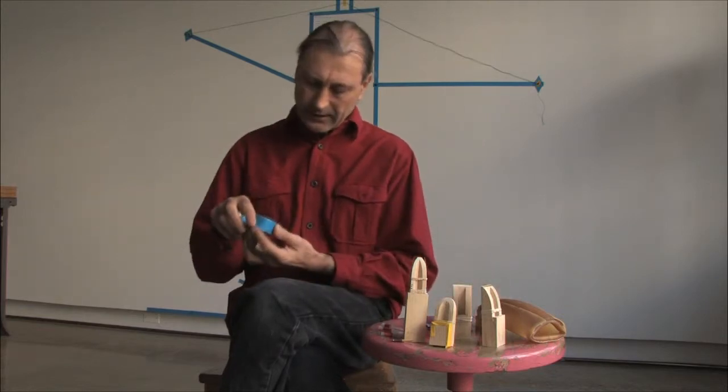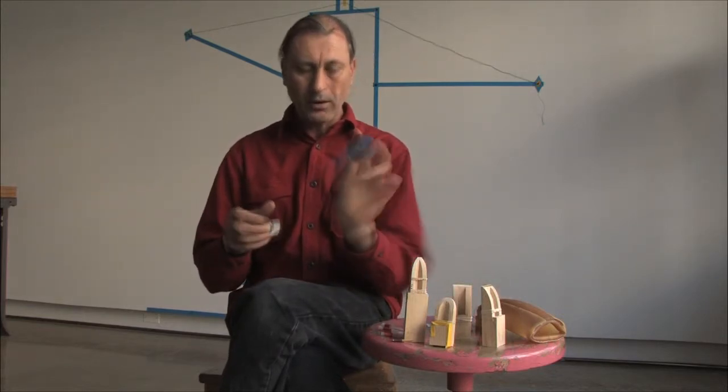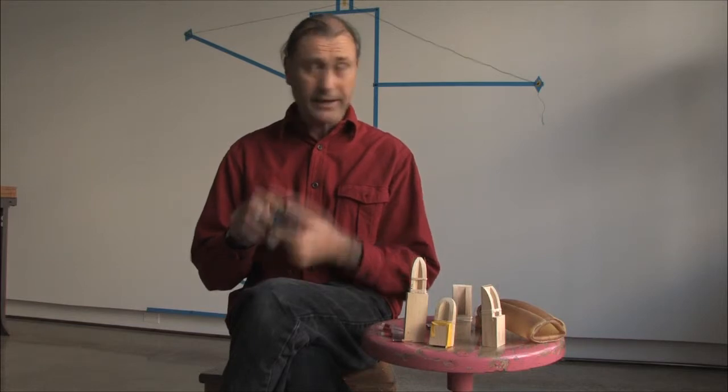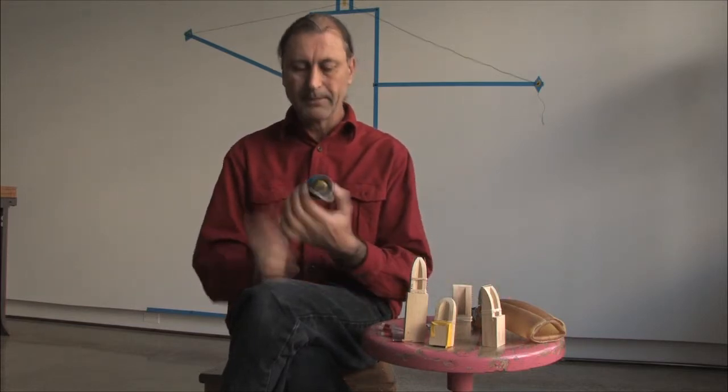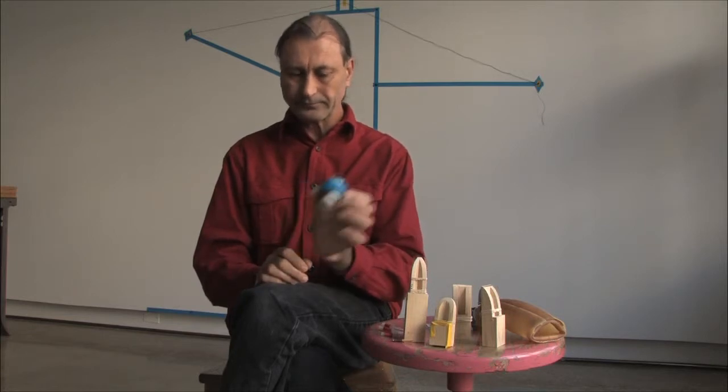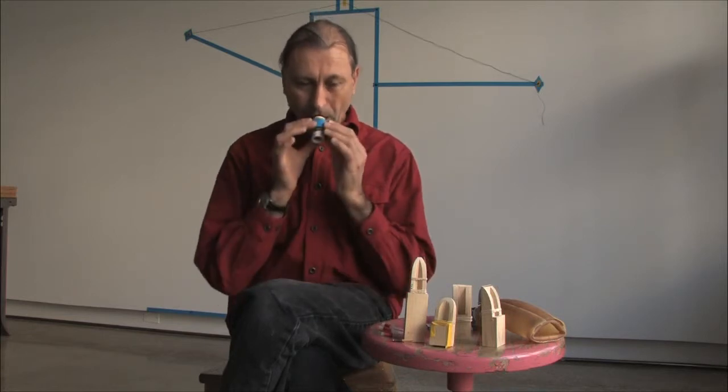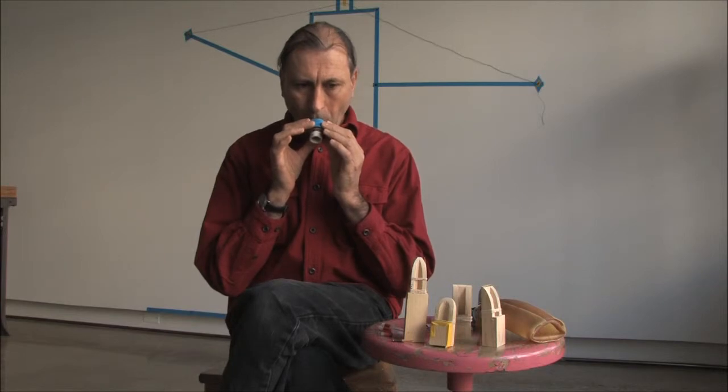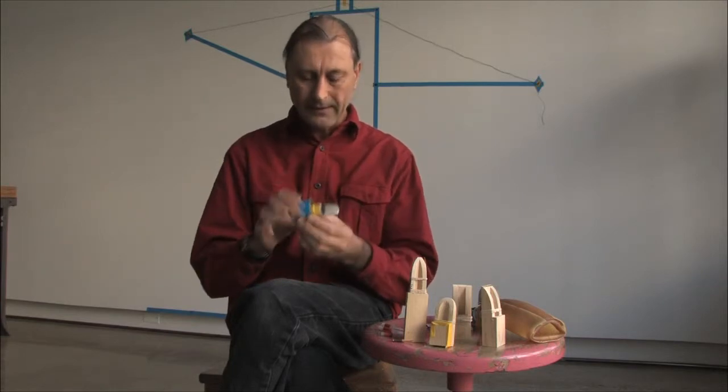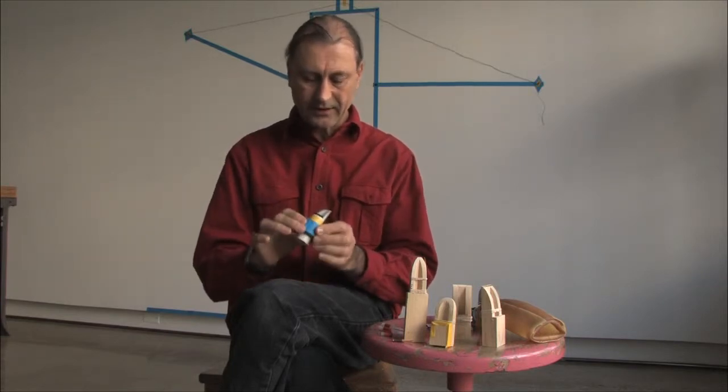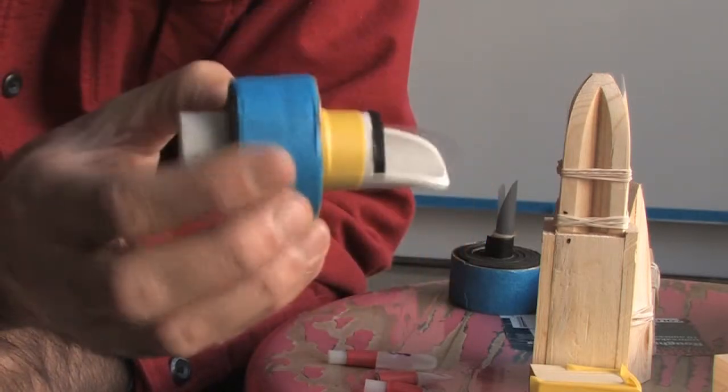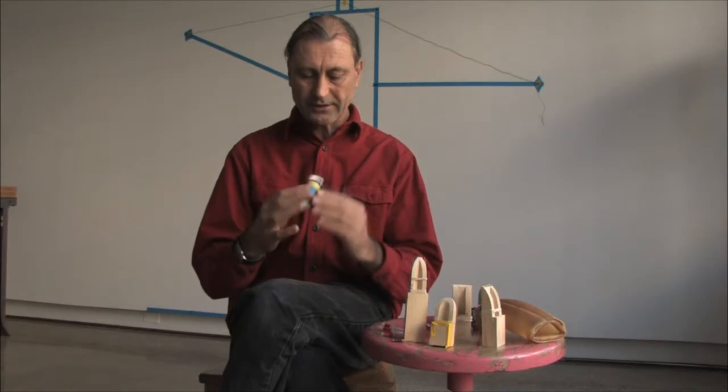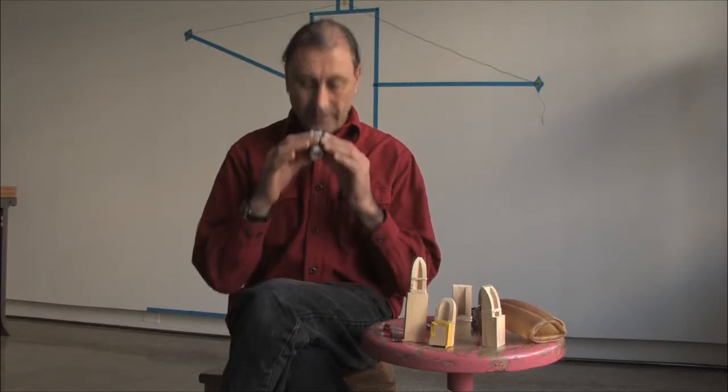But this one only has a quarter inch bore, which was not allowing enough air to flow using the bellows. So I built a larger diameter plastic reed. And that one has a satisfactory amplitude at appropriate pressures. It also changes pitch rather nicely with changes in pressure.